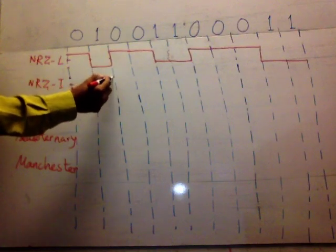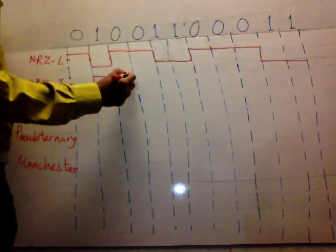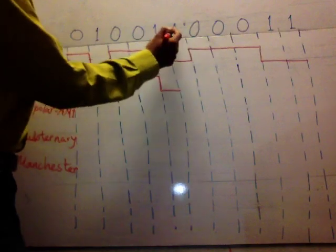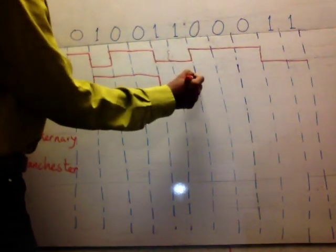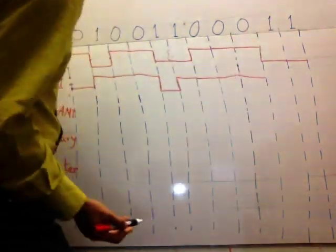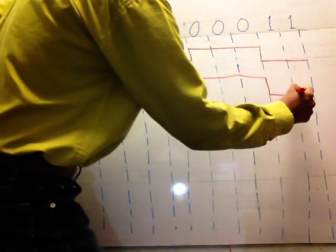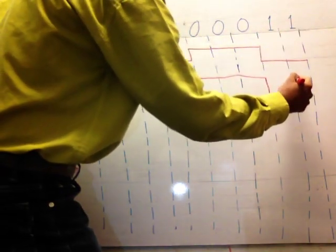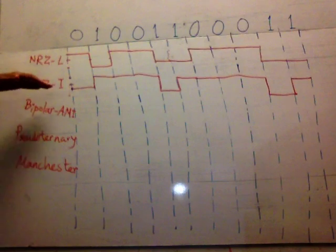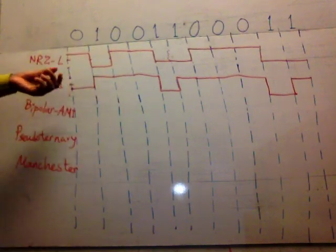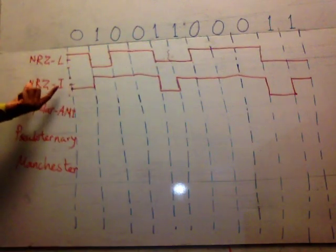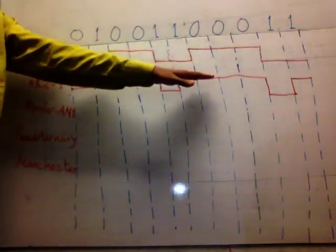Zero means no transition, so you continue. One means transition, so from high to low you change. Again, one means transition, so from low to high you change. Zero means no transition, you continue. One means transition, so you change from high to low. Again, transition from low to high, and so on. That's how we convert this digital data into digital signal using NRZ inverted — a discrete, abrupt signal.